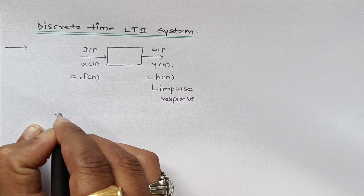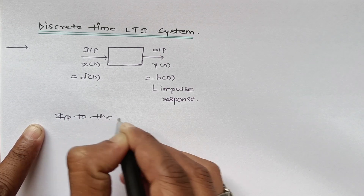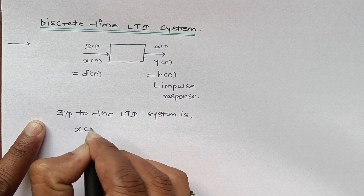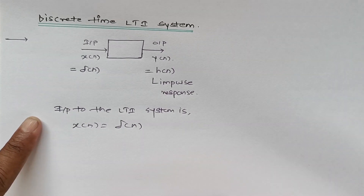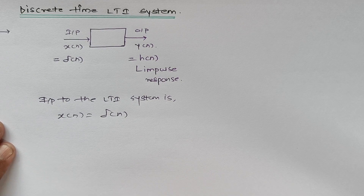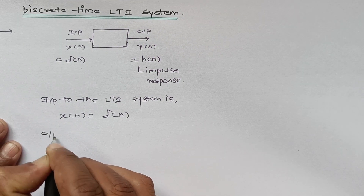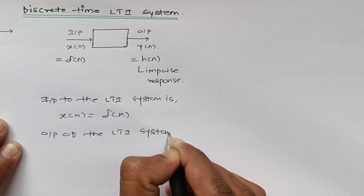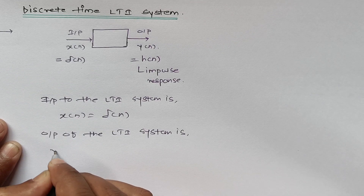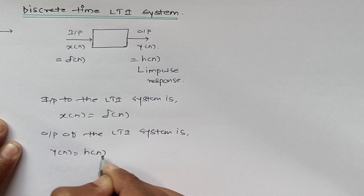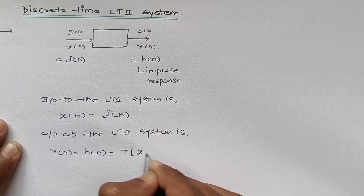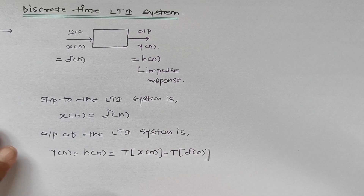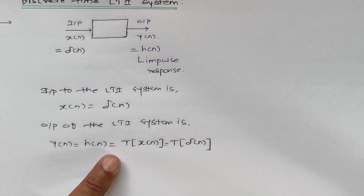The input to the LTI system is x of n, which is equal to the impulse function del of n. Based on that, we will get the output of the LTI system as y of n, which is h of n. This is found by performing the transformation on x of n — that is, the transformation of del of n, where T stands for the transformation.